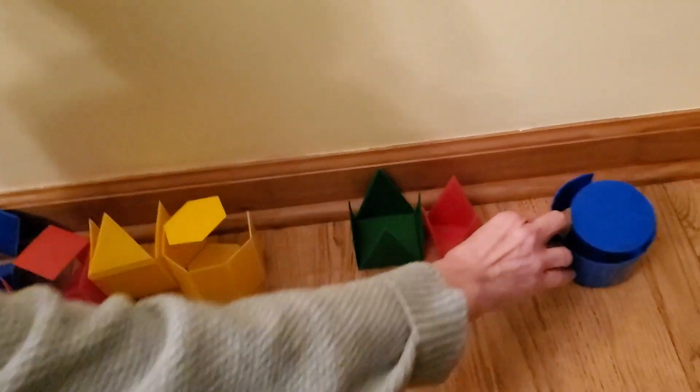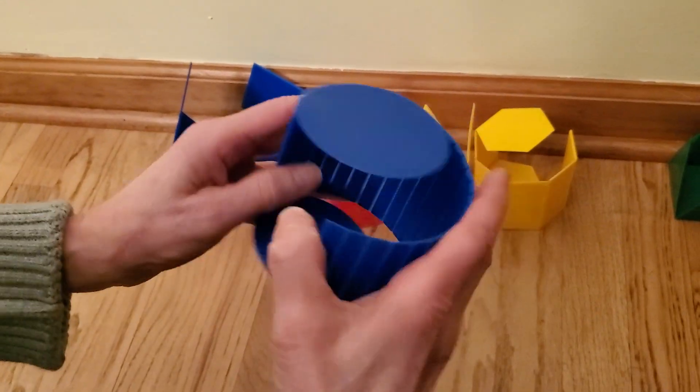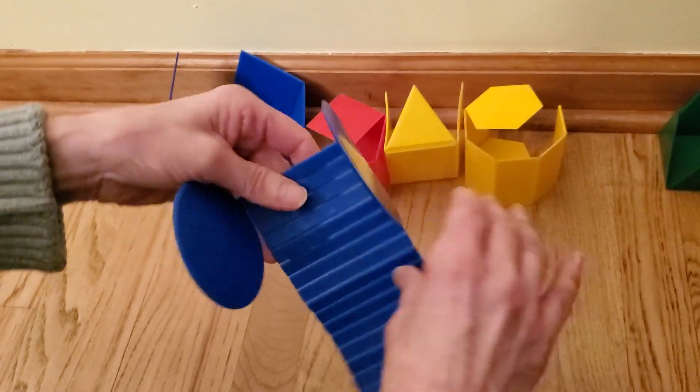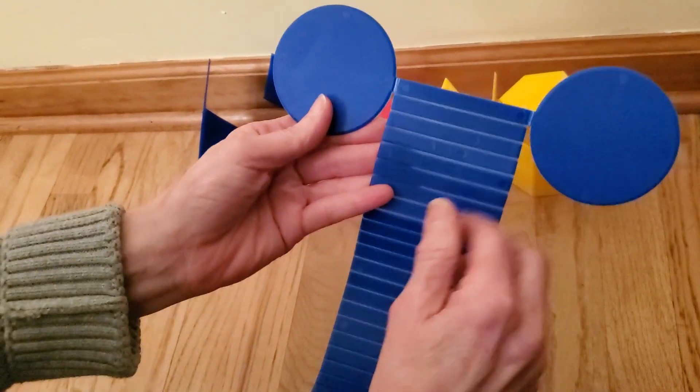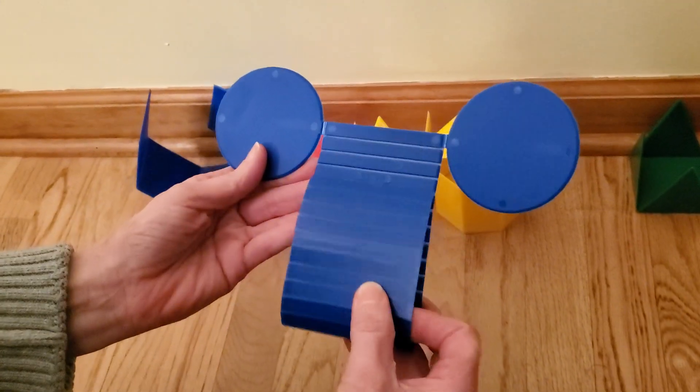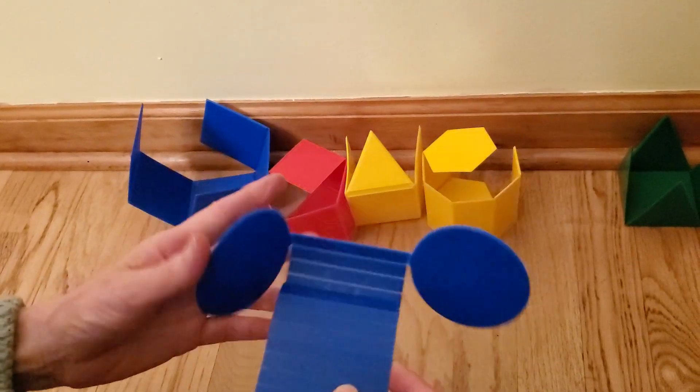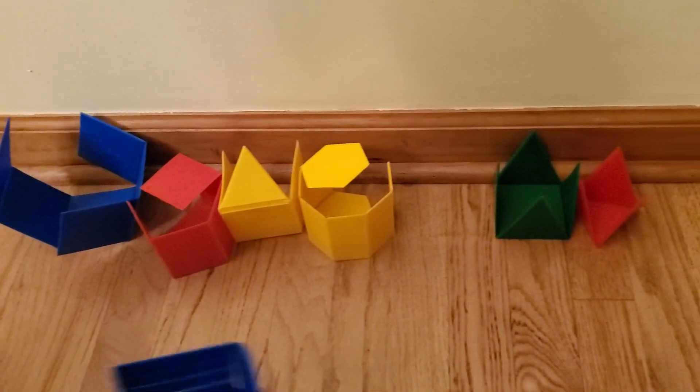And the last shape is our cylinder. Our cylinder is made up of a large rectangle and two circles. It currently has three faces. It looks very similar to an elephant's face or Mickey Mouse. And that's what three-dimensional shapes look like.